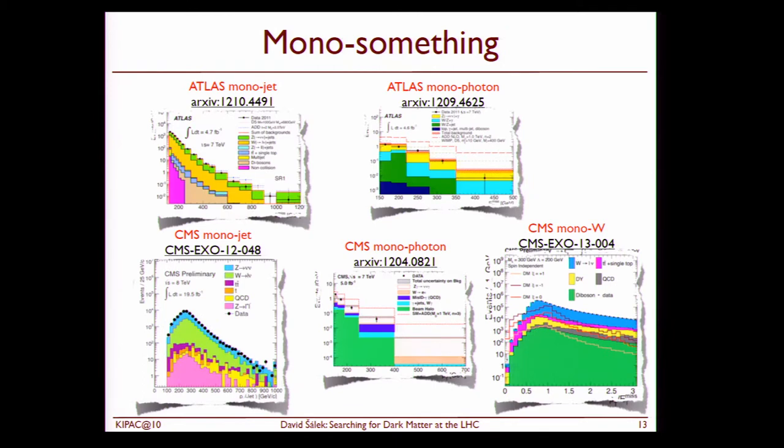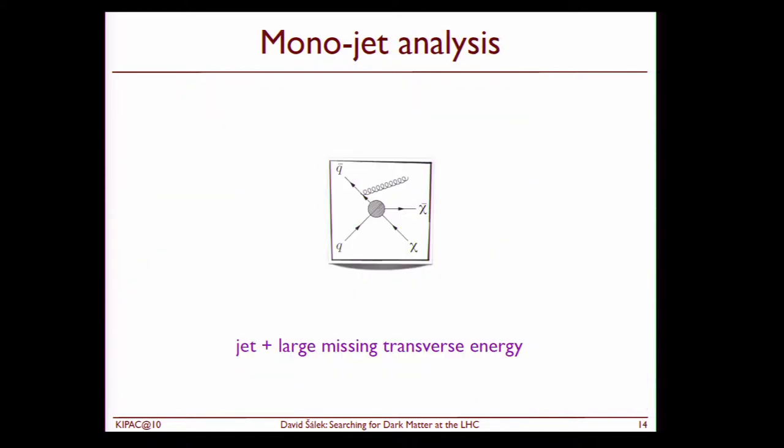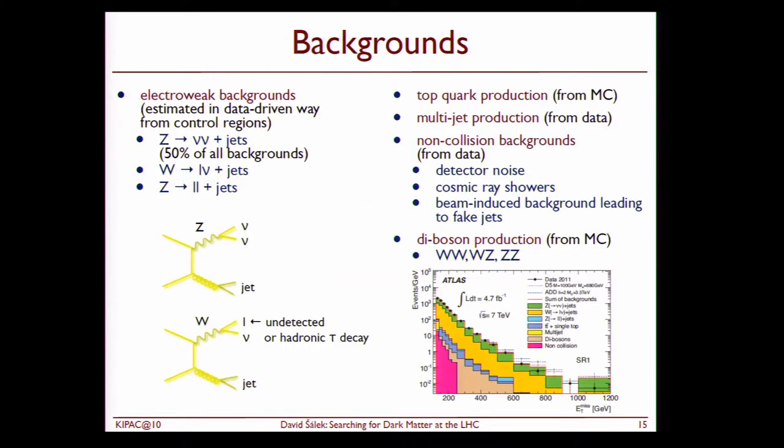First I would like to summarize the mono something searches we have at the LHC. This is what we have at the moment, the public results by both Atlas and CMS. So this is the monojet analysis, monophoton, and CMS also provides the results on mono W. I would like to talk a bit about the monojet analysis just to quickly summarize how such a search looks like.